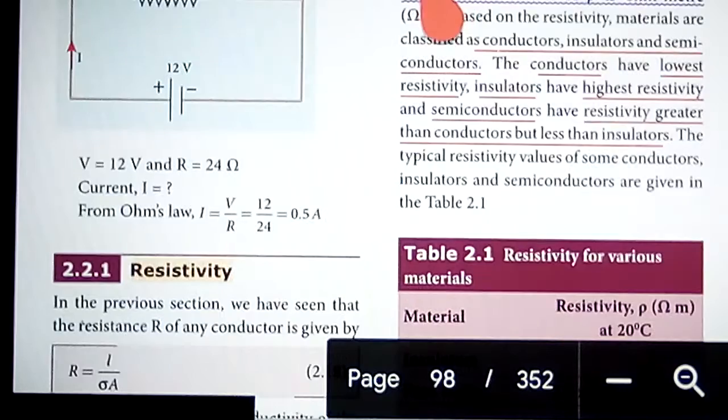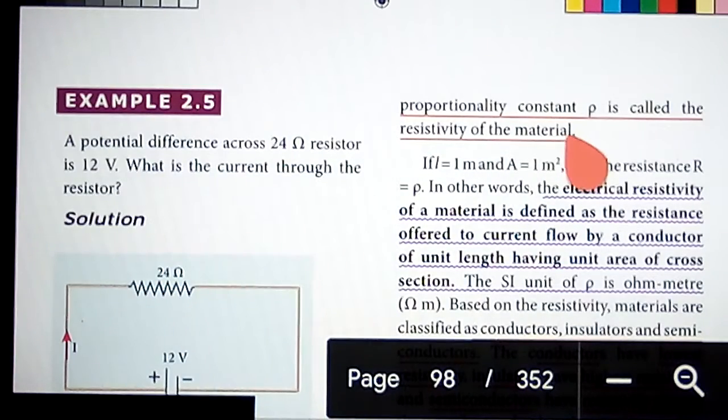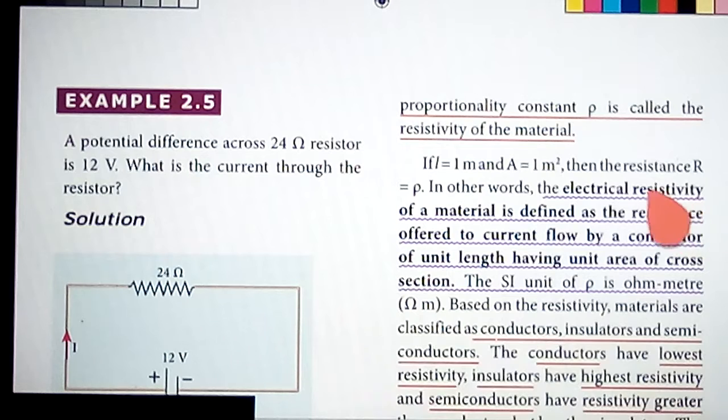The electrical resistivity of a material is defined as the resistance offered to current flow by a conductor of unit length having unit area of cross section.